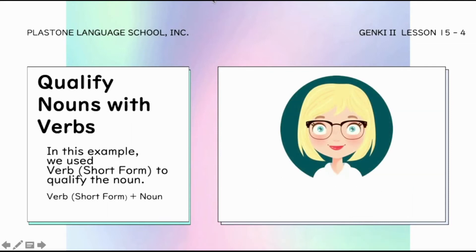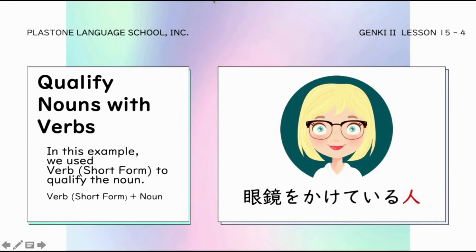Gamitin naman natin ang verbs para i-describe ang isang noun. Again, we will use hito as reference. For example, megane o kakiteiru hito — or a person who wears glasses. Take note lang ulit natin that when we use verbs to qualify nouns, the verbs should be in short forms. So sa example natin, instead of kakiteimasu, ginawa natin siyang kakiteiru, which is in short form.